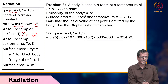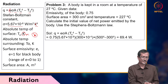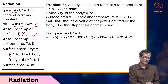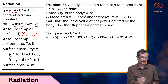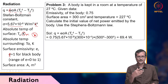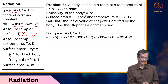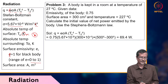The surrounding absolute temperature is T_o, again in Kelvin. Surface emissivity can be written as E or epsilon. For a black body — which is a perfect absorber or perfect emitter — epsilon equals 1. The range of emissivity is 0 to 1. Surface area A is in meter squared.